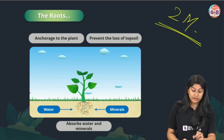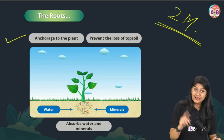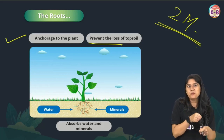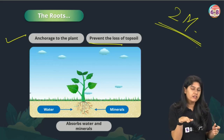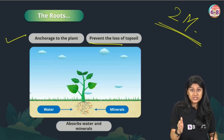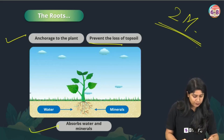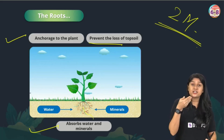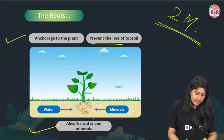The functions of roots — which can come for two marks in an examination — are: they provide anchorage to the plants, they help in preventing the loss of the top soil by holding the most fertile layer, and they help in the absorption of water and minerals from the soil, which then move throughout the plant.